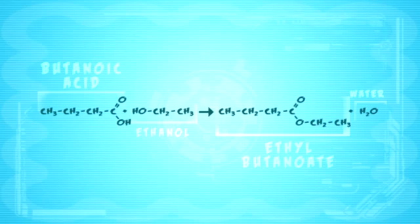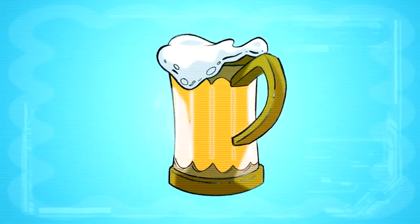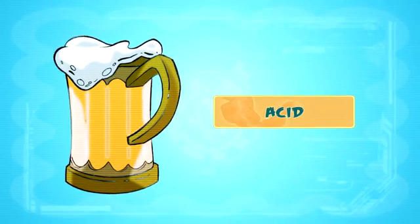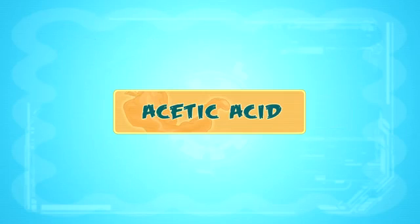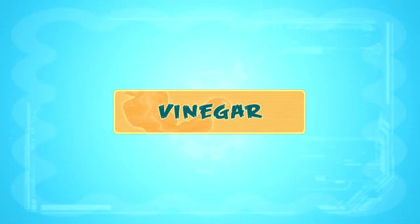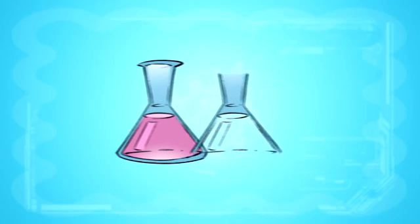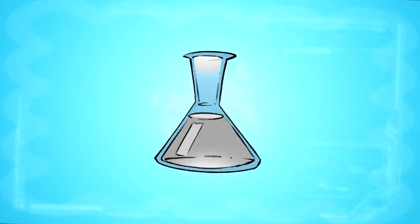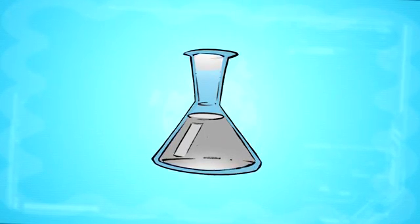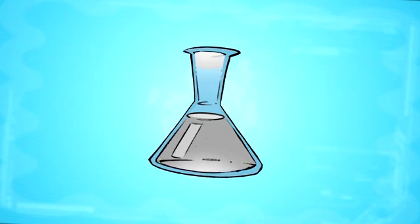But wait a second, isn't ethanol the type of alcohol found in alcoholic beverages? That's true, but when it combines with the acid, it loses the characteristics of drinking alcohol. Likewise, acetic acid is the main component in vinegar. Yet when it reacts with an alcohol, the flavor changes dramatically. When two compounds react to form a new compound, the properties of the new compound are not a simple combination of those original ones. They are completely different.